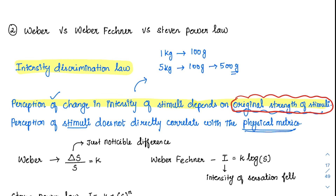Our perception is not completely correlated with the physical matrix. Just because I add 500 grams, it does not mean the brain calculates the exact 500. You will just say there is a noticeable increase. In the previous example for the same 1 kg, 100 grams increase was a just noticeable increase.